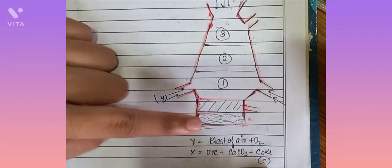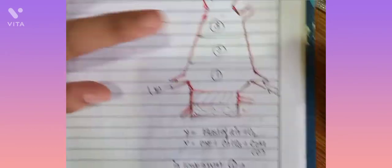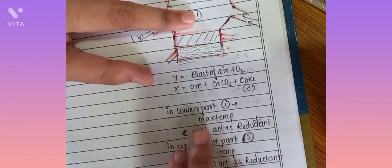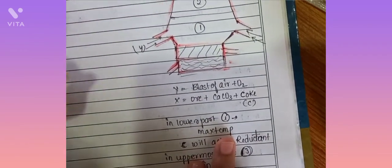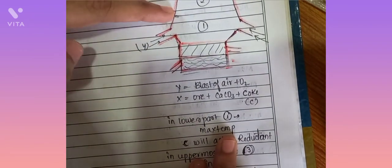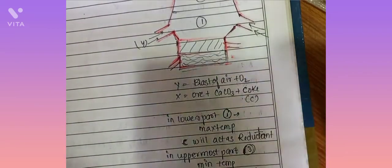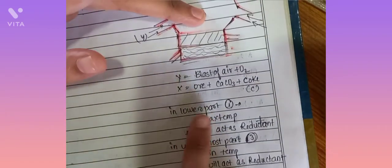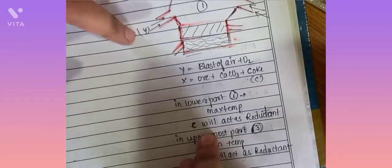Here I have indicated three regions. In the first region, the lower part, temperature is maximum because I have sent this blast of air with high temperature. Here carbon will act as a reductant.